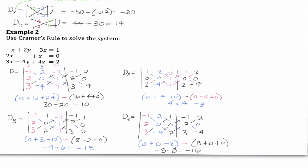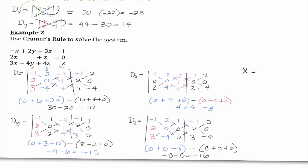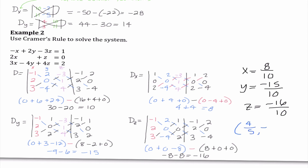Now let's figure out our answer. x is D sub x divided by D, y is D sub y divided by D, and z is D sub z divided by D. This reduces to x equals 8 over 10, which is 4 fifths. y equals negative 15 over 10, which is negative 3 halves. And z equals negative 16 over 10, which is negative 8 fifths.